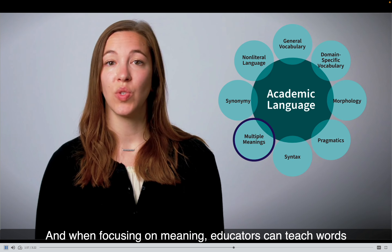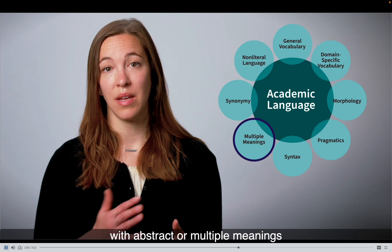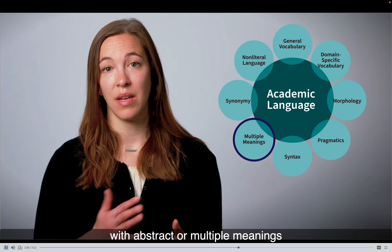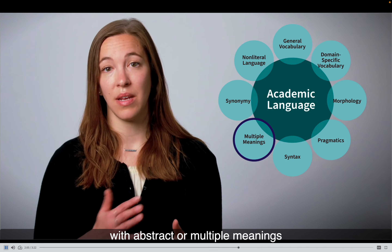In texts, students encounter morphologically complex words, or words with prefixes, suffixes, and roots, as well as general academic and discipline-specific words. Teaching morphemes gives students strategies for unlocking the meaning of unfamiliar words. And when focusing on meaning, educators can teach words with abstract or multiple meanings that appear across curricula, as well as discipline-specific words that are used in precise contexts. With this knowledge, students can comprehend and acquire new academic vocabulary.